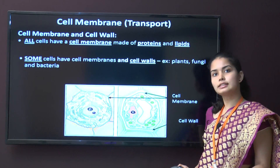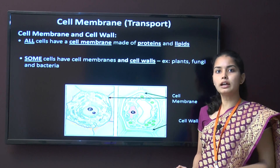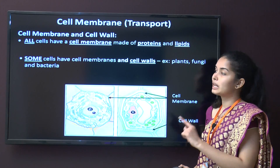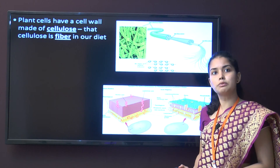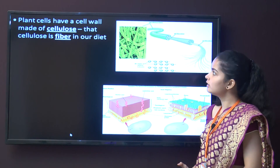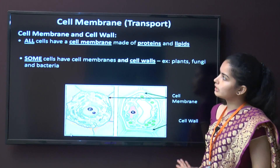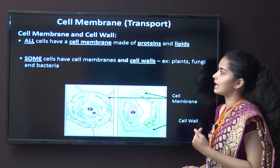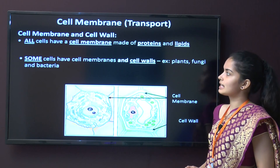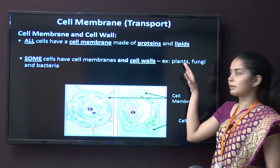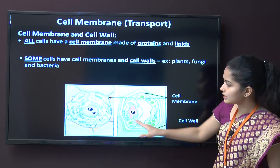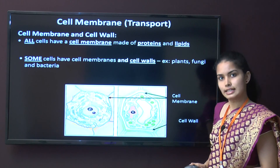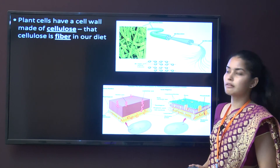The cell membrane and the cell wall are two different things. Cell walls are present in plant cells and in some microorganisms, while the cell membrane is present in all cells. All cells have a cell membrane made up of proteins and lipids. Some cells have both membranes and cell walls — for example, plants and fungi.